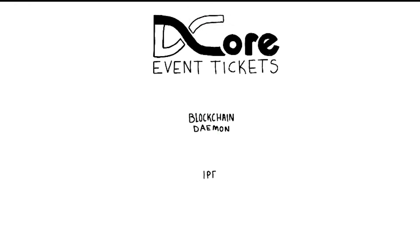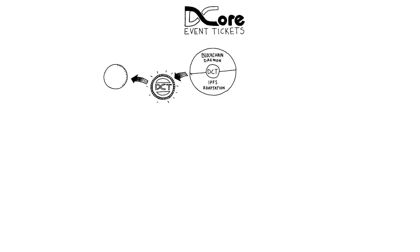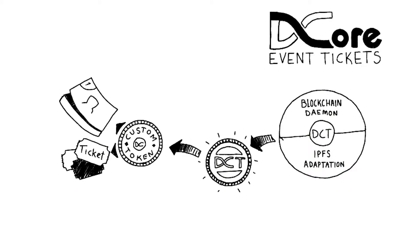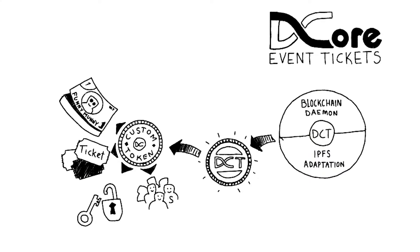Welcome to dCore for Event Tickets. Using our innovative blockchain technology and DCT, you can now create your very own custom tokens. These custom tokens allow project creators to distribute things like special currencies, live event tickets, digital property keys, or even crowdfunding assets.